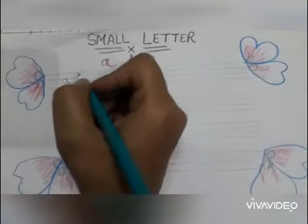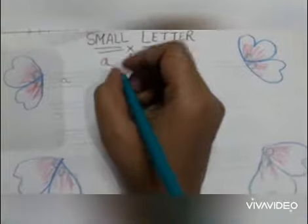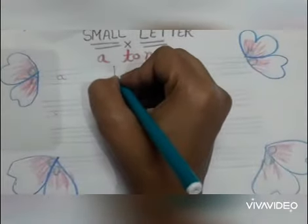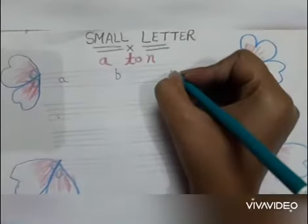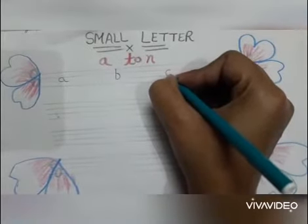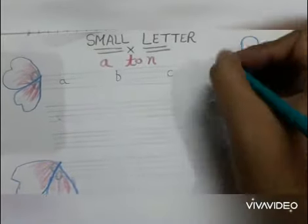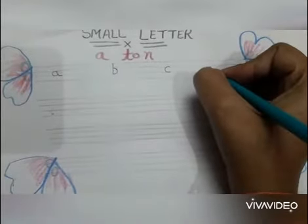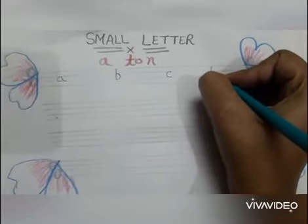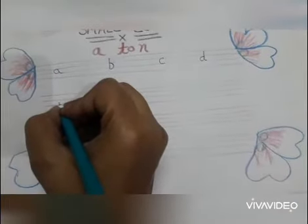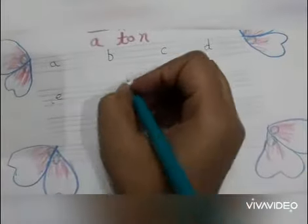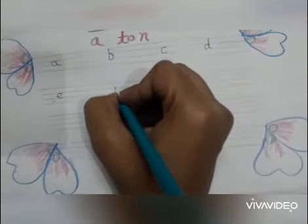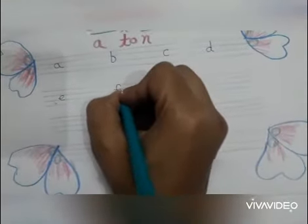A, A, apple. B, B, bowl. C, C, cat. D, D, dog. E, E, elephant. F, F, fish.